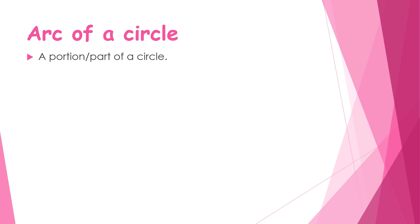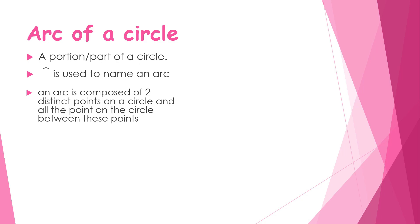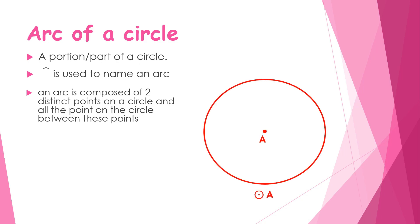An arc of a circle is a portion or part of a circle. An arc is composed of two distinct points on the circle and all the points between them on the circle. On Circle A, with points B and C on the circle, taking B, C, and all points between them forms an arc — so arc BC is an arc of Circle A.